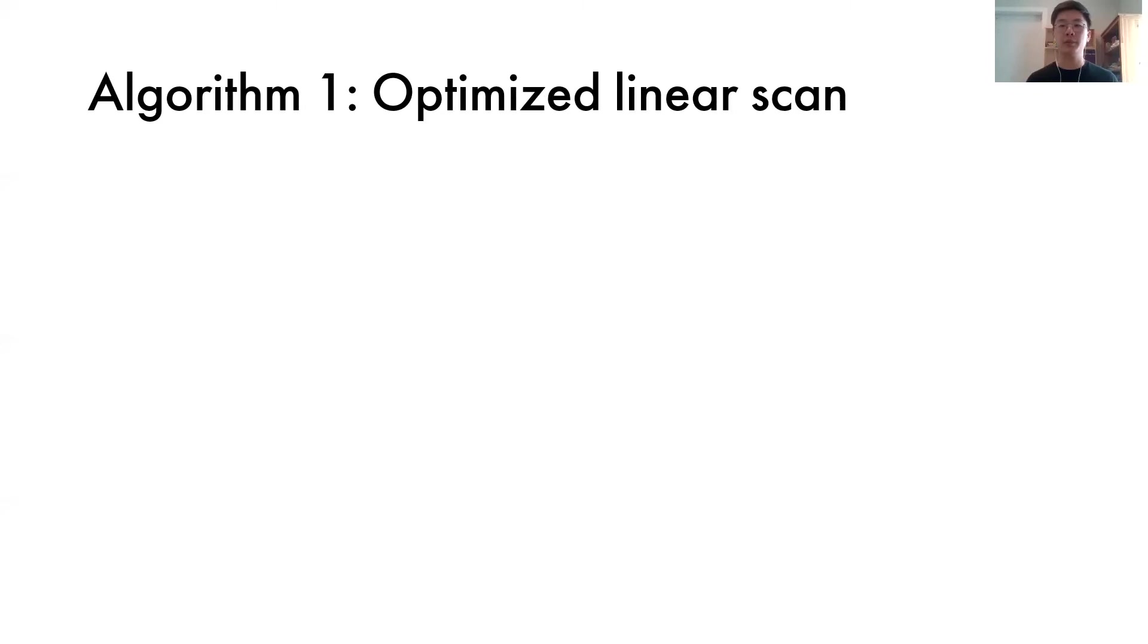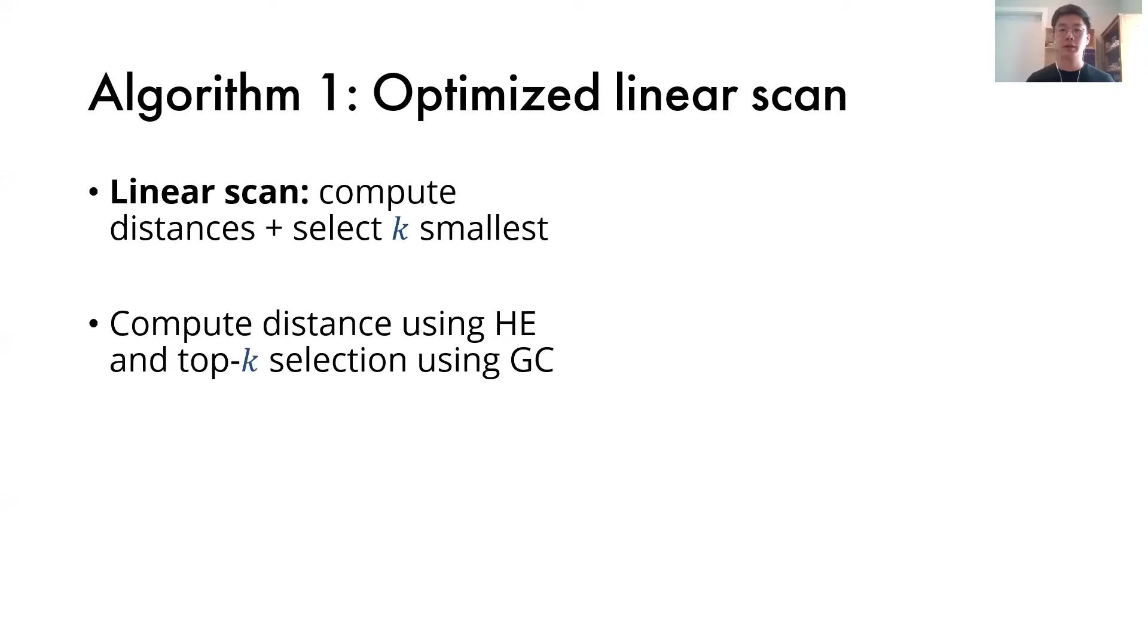Now let's go over our first algorithm, which is an optimized linear scan. In this algorithm, we compute the distance between the query point and all the points in the database, and then we select the k-smallest points. The distances are computed using homomorphic encryption, and the top-k selection is done using gobble circuits. For the dataset that we consider, the distance computation is very fast, so the top-k selection becomes the bottleneck.